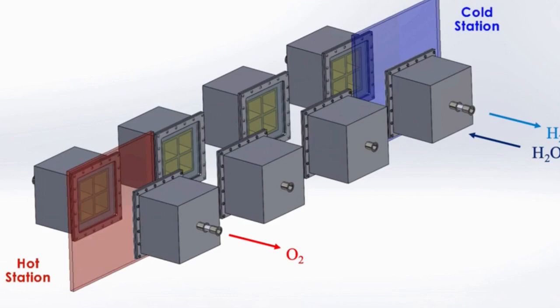At the heart of a conceptual STCH system is a two-step thermochemical reaction. In the first step, water in the form of steam is exposed to a metal. This causes the metal to grab oxygen from steam, leaving hydrogen behind.